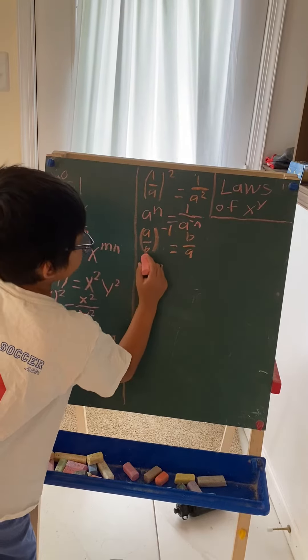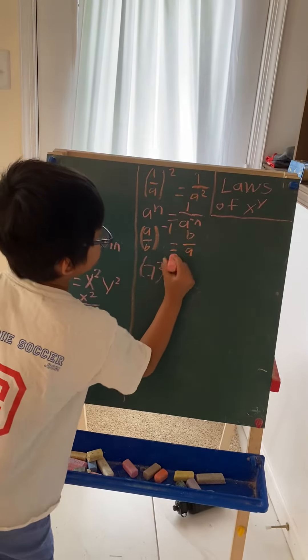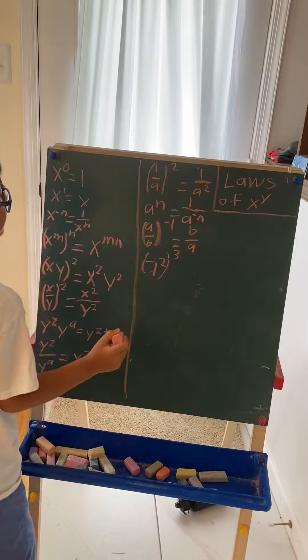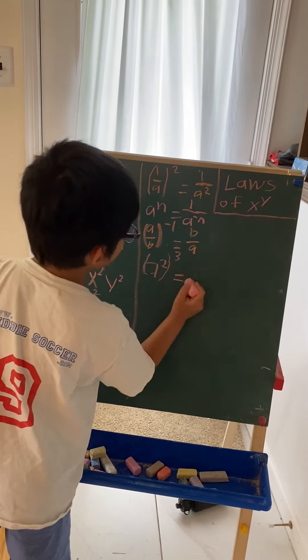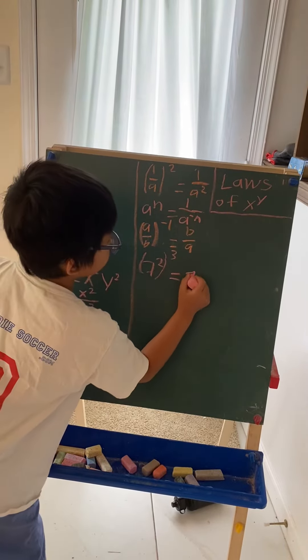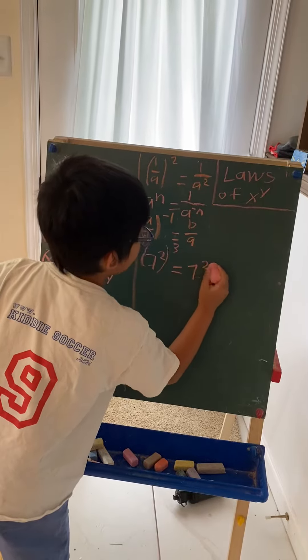So, 7 to the second, grouped in parentheses, and the whole group is being raised to 3, will be equal to 7 to the power of 2 times 3.